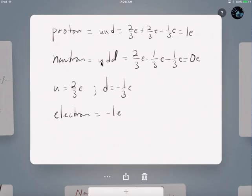We have neutrons, and they are made up of one up quark and two down quarks. So, you have two-thirds E minus one-third E minus one-third E. So, you get zero E for a neutron.